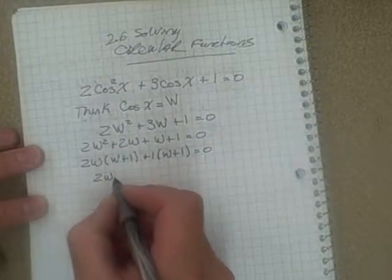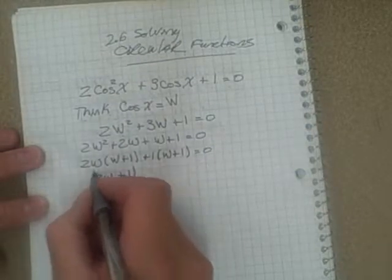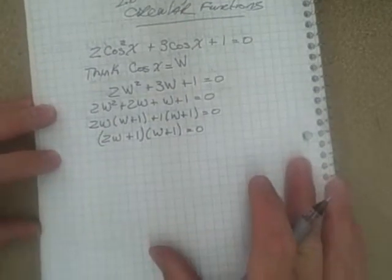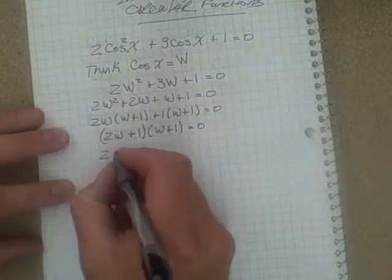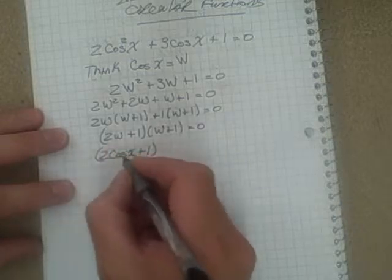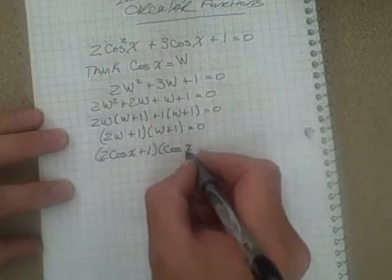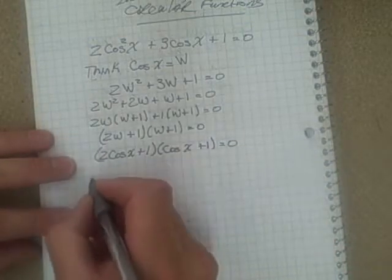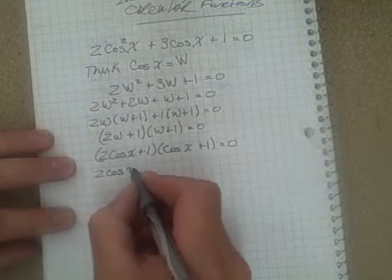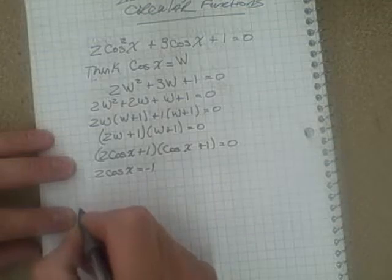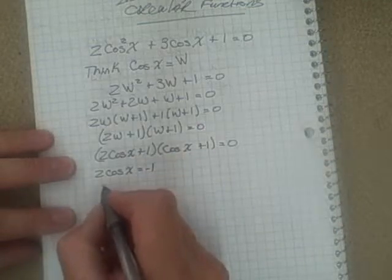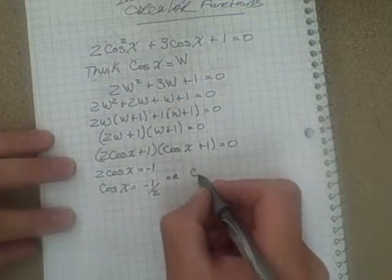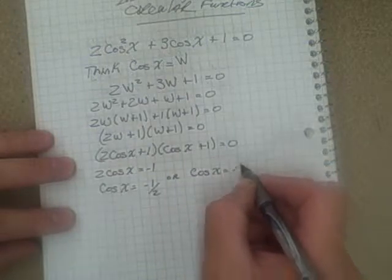And then of course here just put +1(w + 1) equaling 0. So our factored equation is 2w + 1 times w + 1 equaling 0. And if we convert that back into a function with cos in it, it's (2cosx + 1)(cosx + 1) equaling 0. So that means that if we solve this one here and equal it to 0, 2cosx = -1. If we bring the negative 1 over there and then divide by 2, so cosx can equal -1/2 as well.